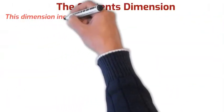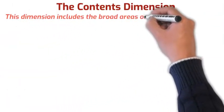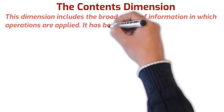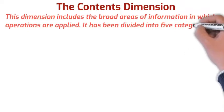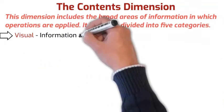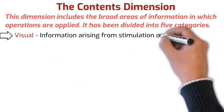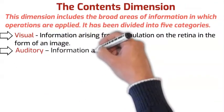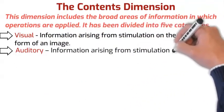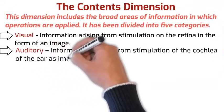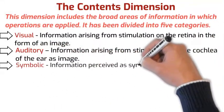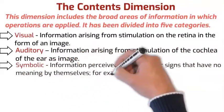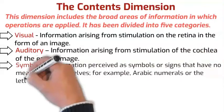This dimension includes the broad areas of information in which operations are applied. It has been divided into five categories: visual, information arising from stimulation on the retina in the form of an image; auditory, information arising from stimulation of the cochlea of the ear as image; symbolic, information perceived as symbols or signs that have no meaning by themselves, for example, Arabic numerals or the letters of an alphabet.